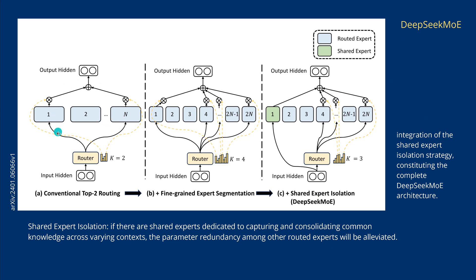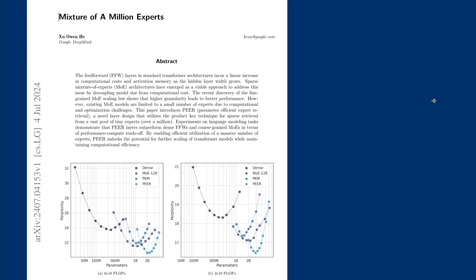Here you have the conventional top-two routing: Expert System 1 and Expert System N. Then, define fine-grained expert segmentation. DeepSeek's Mixture of Expert head also introduced an integration of a shared expert isolation strategy — shown here in green. Shared experts are dedicated to capturing and consolidating common knowledge across varying context levels, so the parameter redundancy among other routed experts will be alleviated. A great idea to implement this.